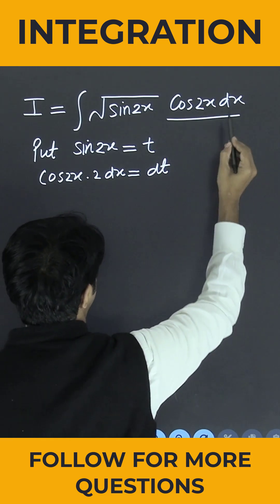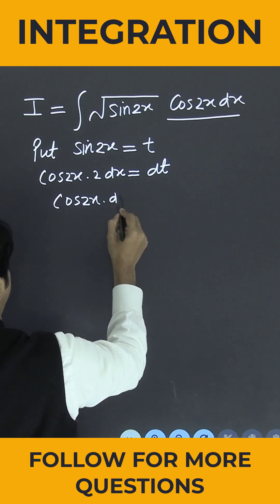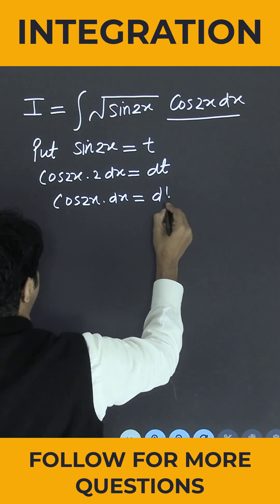So I will be getting cos 2x into 2 into dx is equal to dt. What is our requirement? cos 2x into dx. So can I say cos 2x into dx is equal to dt by 2.